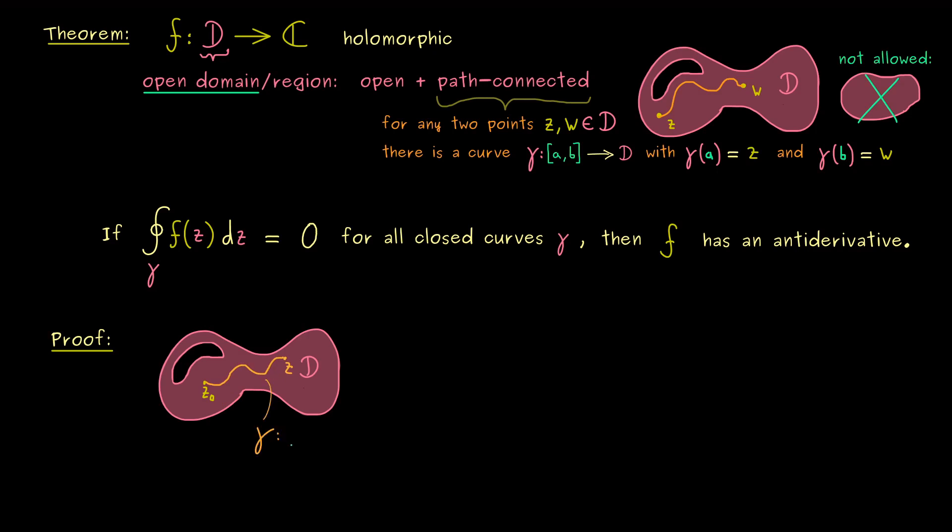It does not matter how the curve exactly looks like. The important thing is that it starts with Z₀ and ends with Z. And to make our life a little bit simpler, let's say the interval where gamma is defined is the interval 0 to 1. Please keep in mind, the point Z₀ is fixed, therefore the index Z here is enough. So in summary, gamma_Z(0) is Z₀, and gamma_Z(1) is Z. And the existence of such a curve gamma_Z is guaranteed by the path connectedness.